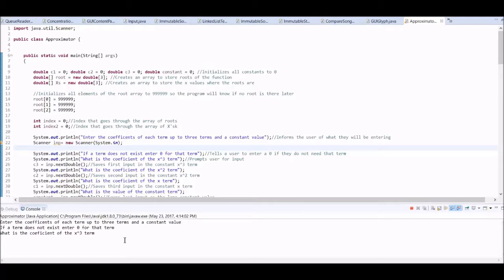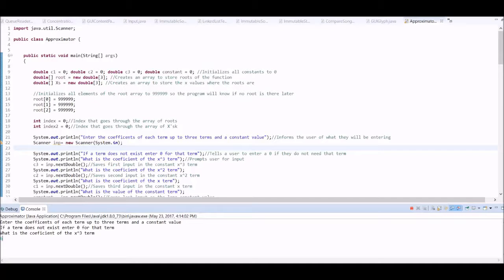As soon as I ran the program, it started to print the lines into the console for input, to prompt the user to enter their values for the degree 3 polynomial. Right now it prompts the user to input the x cubed term. So I went ahead and I entered 6.